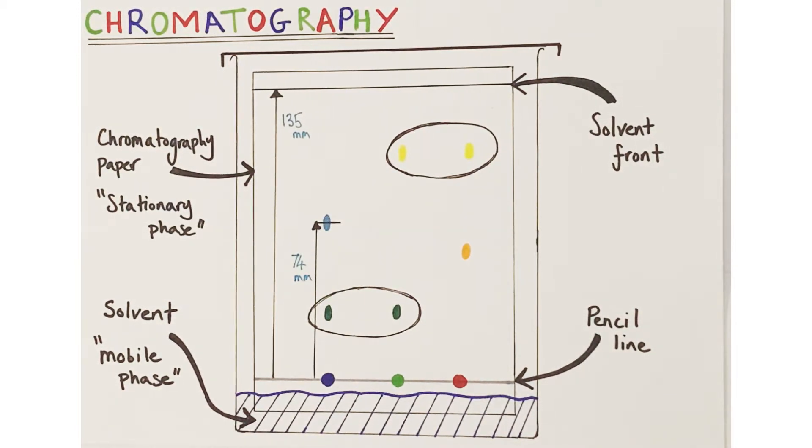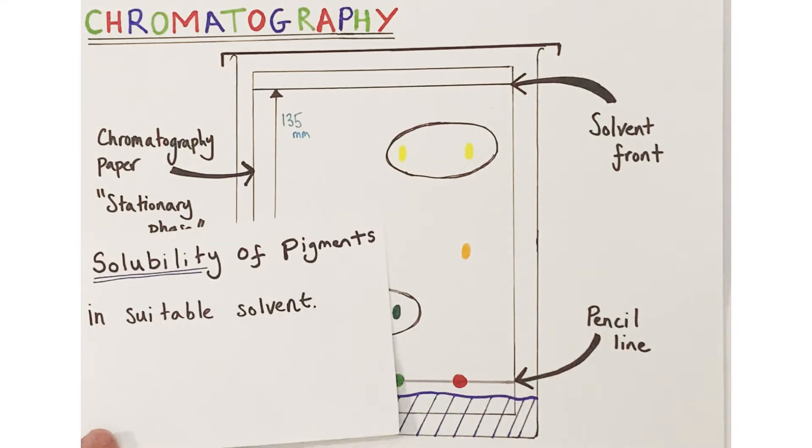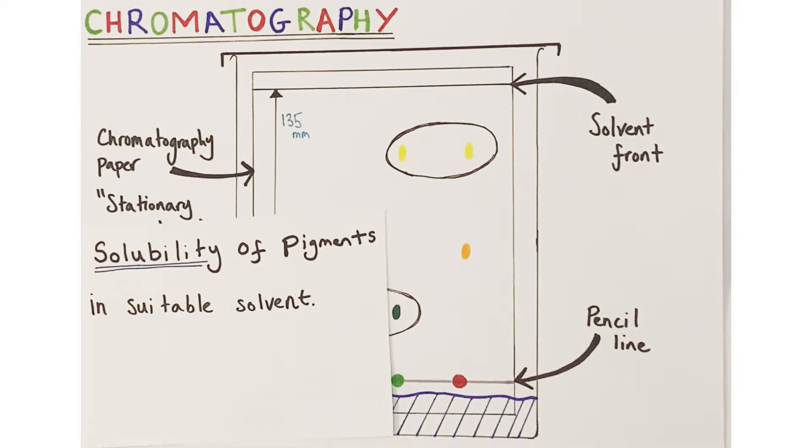Chromatography is a process designed to separate colored substances into their constituent pigments based upon those pigments' relative solubility within a selected suitable solvent. The process works based upon the solubility of different pigments in a selected solvent. That solvent could be water if the pigments happen to be soluble in water, or possibly alcohol if they are not soluble in water but alcohol is a better medium to dissolve those pigments.